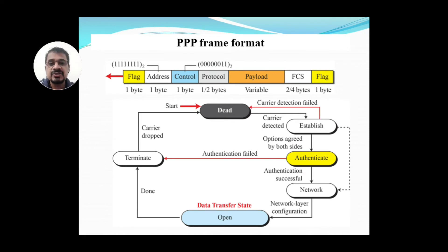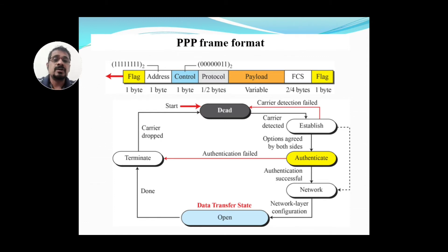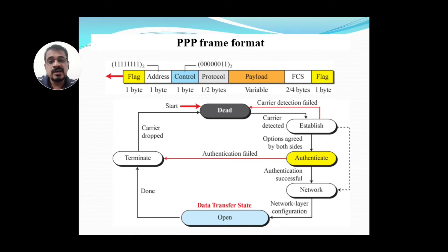This frame format is used for creating a link, authenticating, and data transfer, as shown in the flowchart below. Initially, the PPP connection operates like your home modem. It starts in a dead state. Once started, the carrier is detected — the signal, whether wired or wireless radio waves — and then the connection establishment begins.